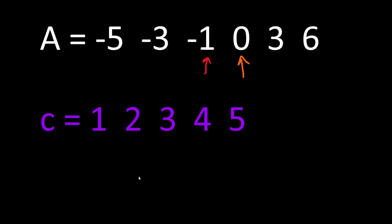We look at number 0, and 0 is also a distinct element — it's different than the absolute value of minus 1 — so we increment our counter once more. Since these pointers are now next to each other, we can stop our algorithm and return the total number of distinct elements.